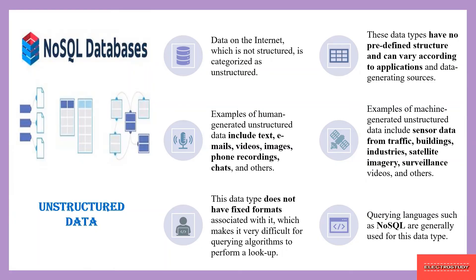Querying languages such as NoSQL are used for unstructured data. Data on the internet that does not have any predefined structure is called unstructured data. These kinds of data do not have any structure of their own and keep generating values according to the application. For example, unstructured data can include text, audio files, video files, images, phone recordings, or chats used in WhatsApp. In a WhatsApp chat there is no limit on words — one message can have any number of words — so that is a kind of unstructured data.